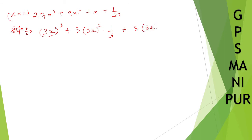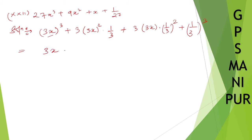Then ab squared plus (1/3) squared — this is b squared. So applying the formula: a cube plus thrice a squared b plus thrice ab squared plus b cube — this is the formula for (a + b) whole cube. Putting in these values you get the answer. That's all. Let us do the next question.